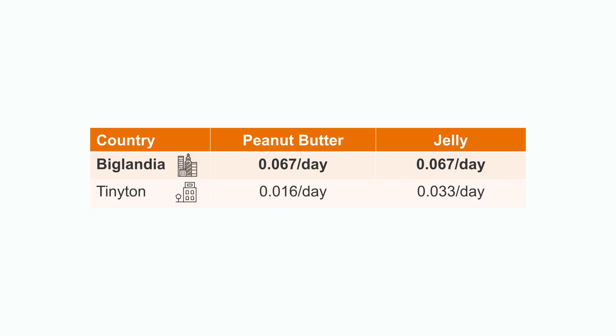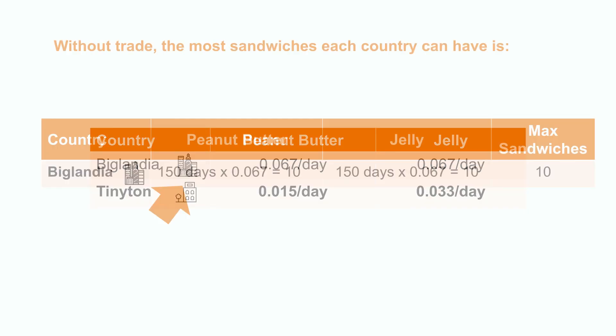If each country just works by themselves, and assuming that they want to maximize how many sandwiches they can make, then at most, Biglandia will dedicate 150 days each to making peanut butter and jelly so that they'll end up with 10 tons of sandwiches per year.